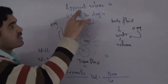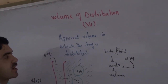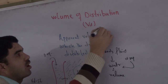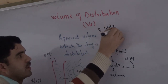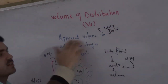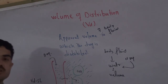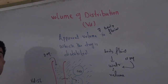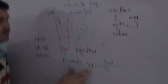Now let's move to the formula and definition of volume of distribution. The volume of distribution is the apparent volume in which the drug is distributed — you may say 'apparent volume of body fluid' or simply 'apparent volume in which the drug is distributed.' Both are acceptable definitions.